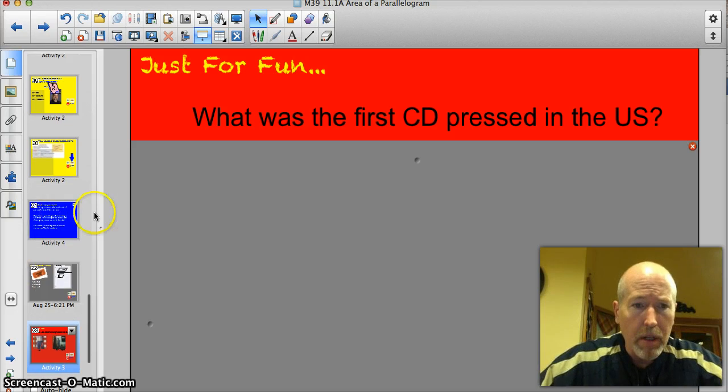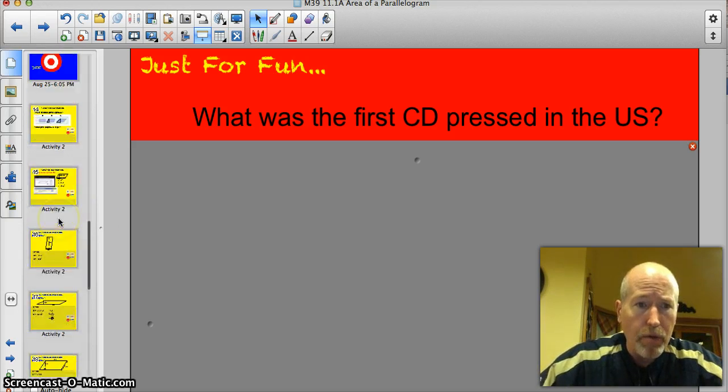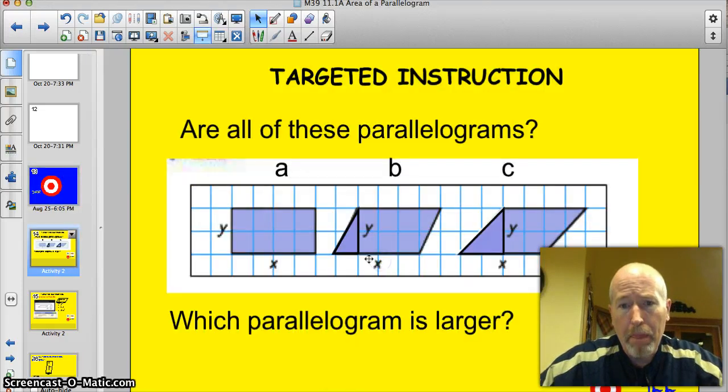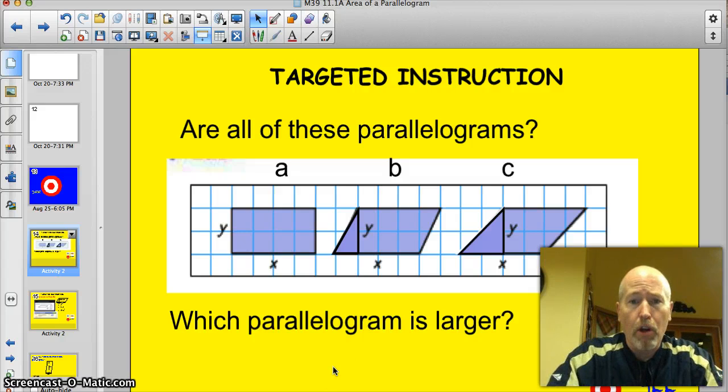Alright, let's do this. The official target for the day is 11.1a. I can find the area of a parallelogram. Alright, let's start off. Are all of these parallelograms? And if so, which parallelogram is larger? Think about it.